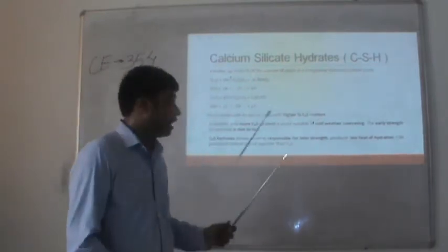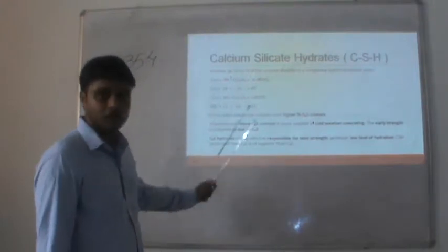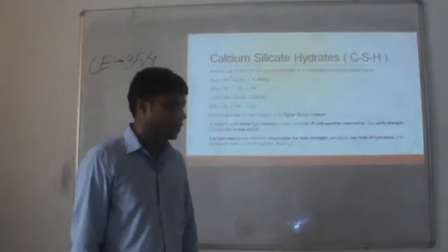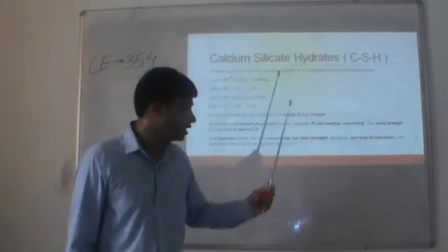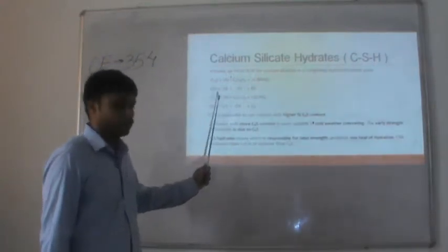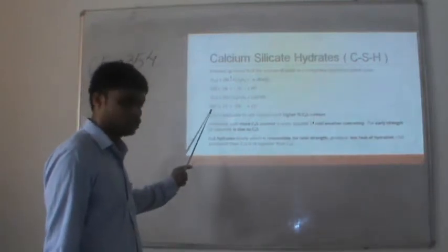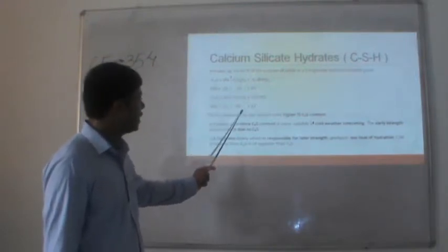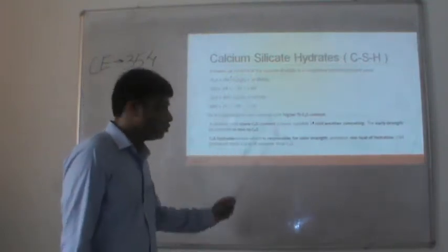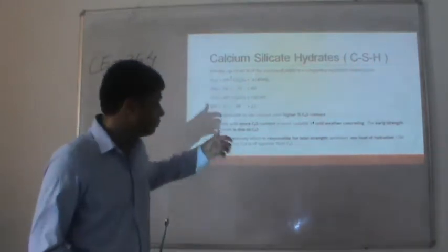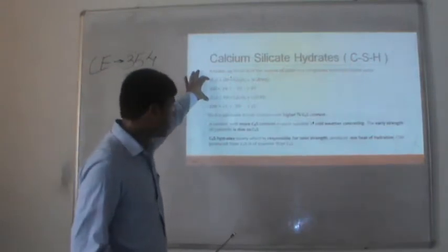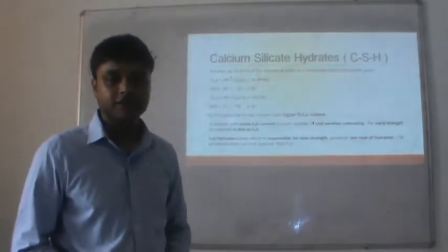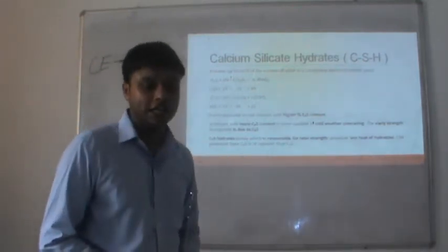In terms of weight: 100 grams of C3S fused with 24 grams of water gives 75 grams of CSH. For C2S, 100 grams fused with 21 grams of water gives 99 grams of CSH and 22 grams of Ca(OH)2. This shows that C2S produces more CSH — more adhesive — than C3S. That's why higher C2S content is used where later strength is needed.